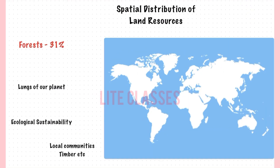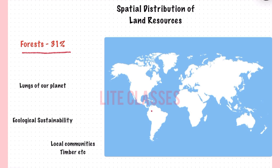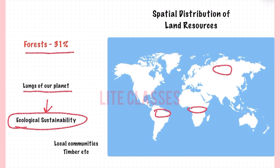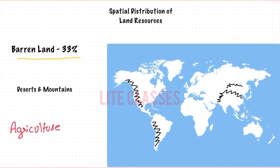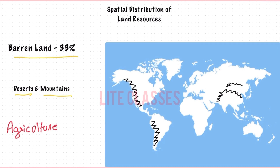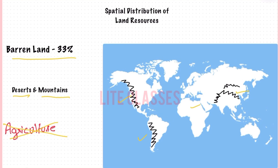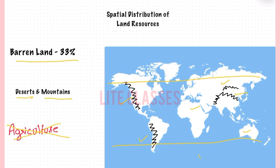Forests constitute around 31% of the total land resources in the world. They are found in large quantities in the Amazon Basin, Siberia, and Central Africa — these are the lungs of our planet and critical for ecological sustainability. They also have socioeconomic importance as a source of livelihood for tribal communities and provide timber. Around 33% of land is barren in the form of deserts or mountains, which are rich in minerals but not suitable for agriculture — for example, the Rocky Mountains in North America, the Andes in South America, the Himalayas in South Asia, the Sahara Desert in Africa, and the Gobi Desert in Asia. The polar areas are essentially the cold deserts of the world.